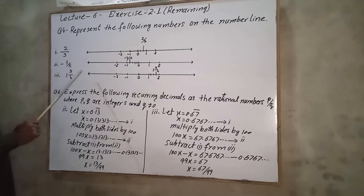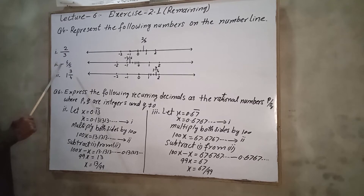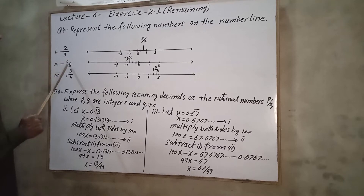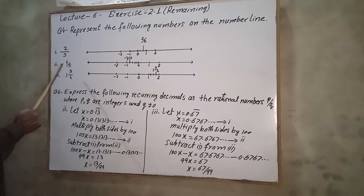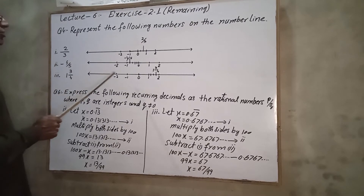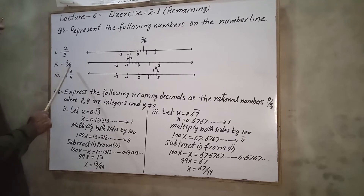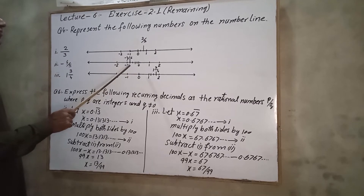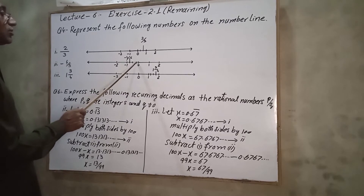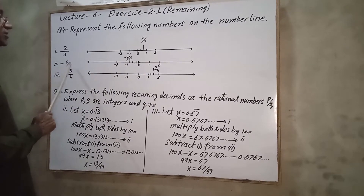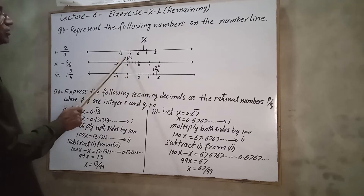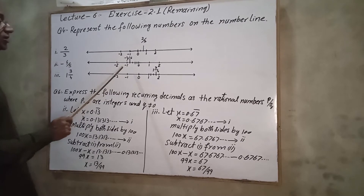Next is -4/5. Since it is negative, it lies between 0 and -1. We divide the distance between 0 and -1 into 5 equal parts: 1, 2, 3, 4, 5. We count 4 parts from 0 toward the left, and that point represents -4/5. This is not very difficult.